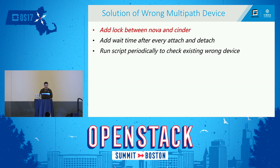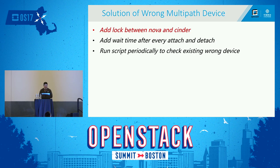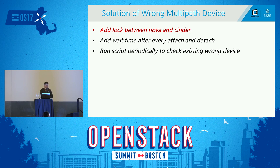For the solution to this problem, we have three approaches. The root solution is to add a lock between Nova and Cinder. However, since we can have several Cinder volumes and hundreds of compute nodes, designing this lock is harder. As partial solutions, we can add some wait time after every attach and detach, and we can run scripts to periodically check existing run devices — if we find a problem, we send an alarm.